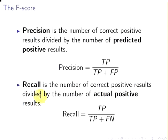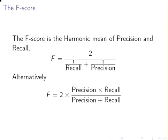Recall is the number of correct positive results divided by the number of actual positive results. There's a slight distinction between the two: precision is how many were correct out of the ones you predicted positive, while recall is how many were correct out of the ones that actually were positive. The F-score is the harmonic mean of precision and recall — here is the conventional harmonic mean formula for two values, which is a rearrangement into a simpler structure.